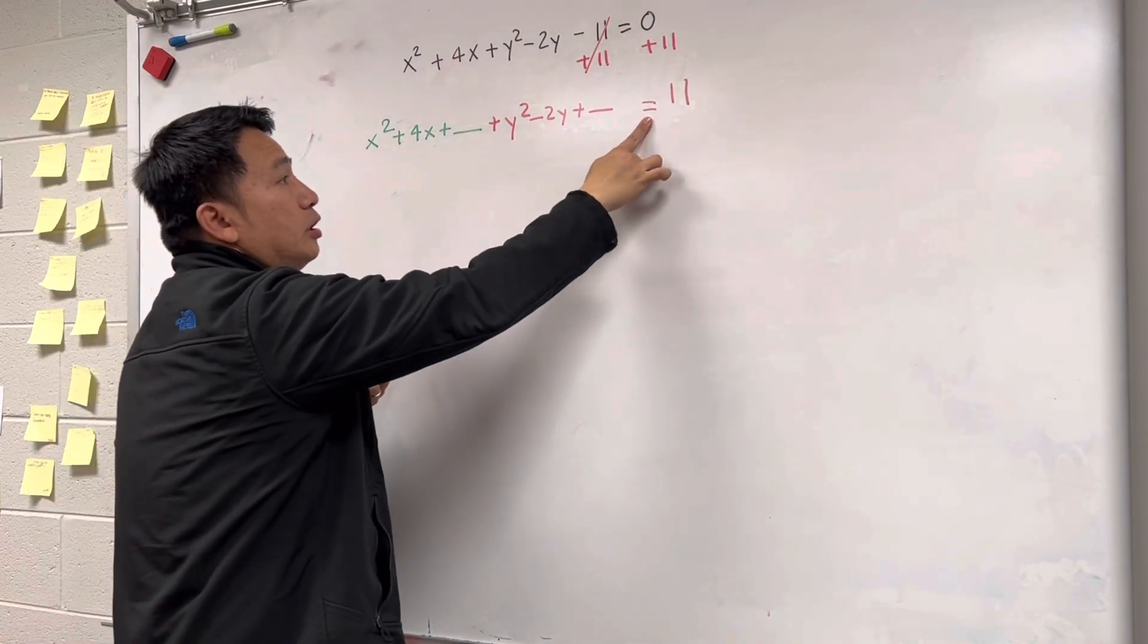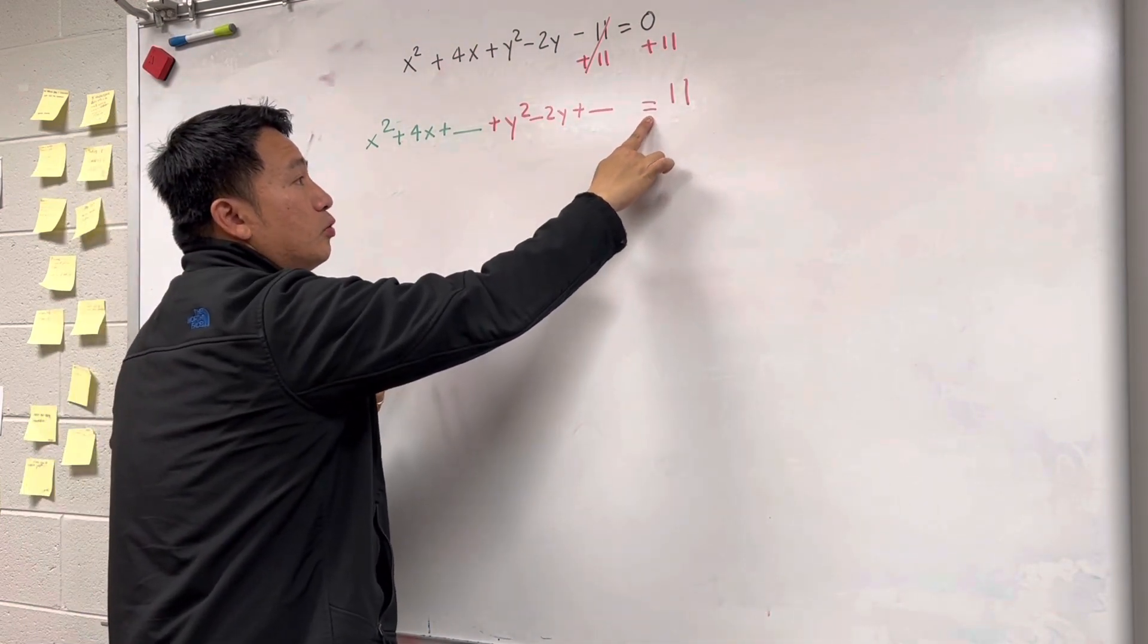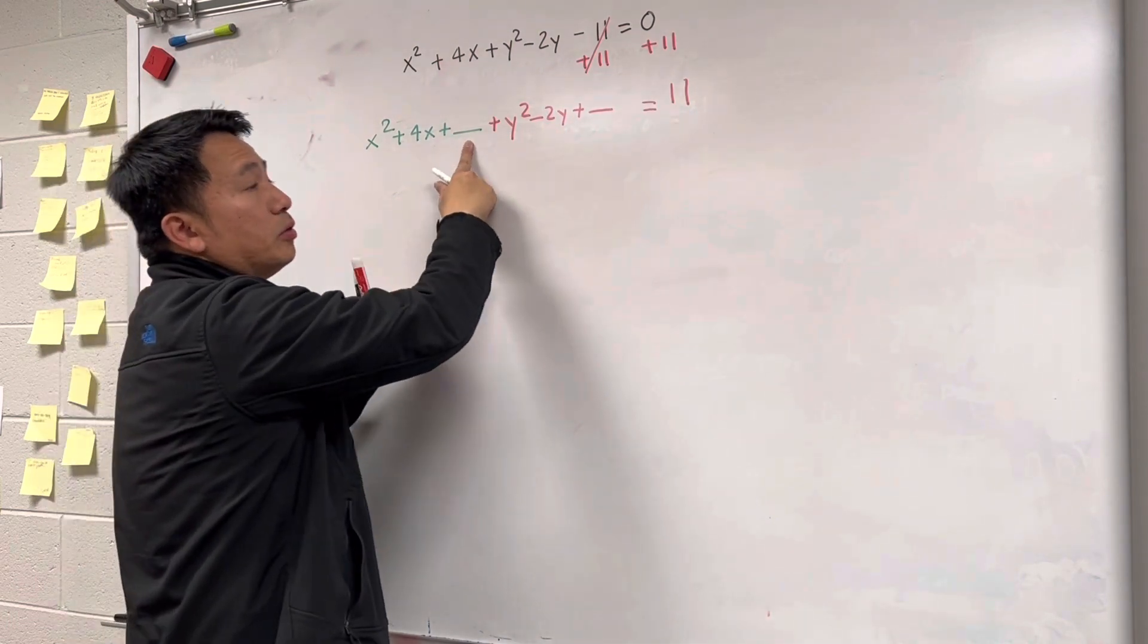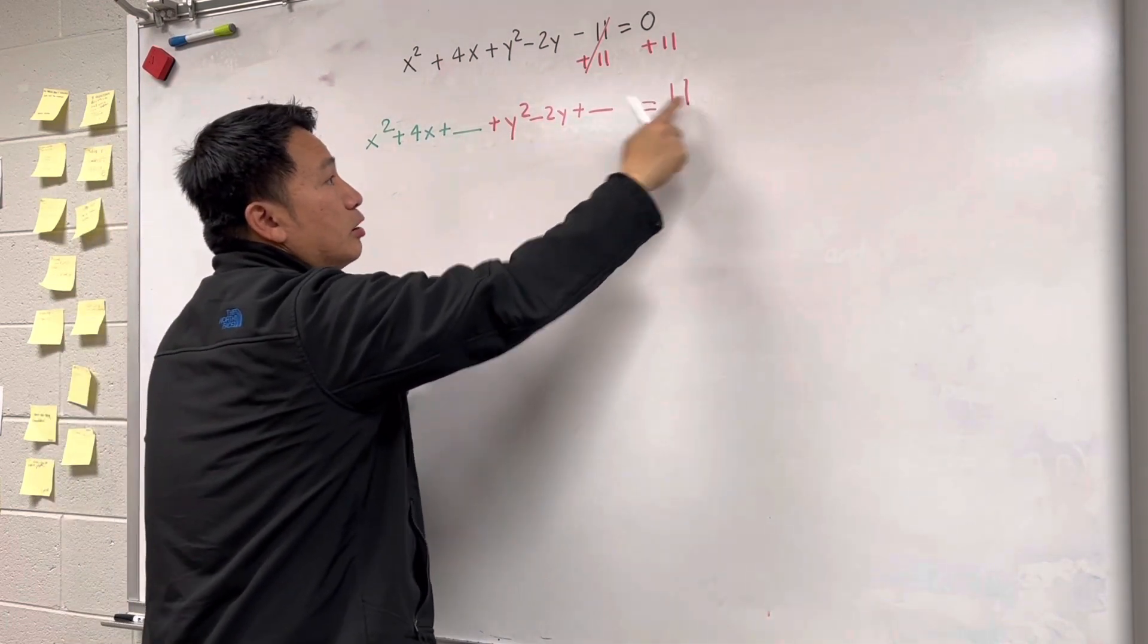And because we see the equation, we need to stay in balance, okay? So when you put something to the left, you need to return it back.